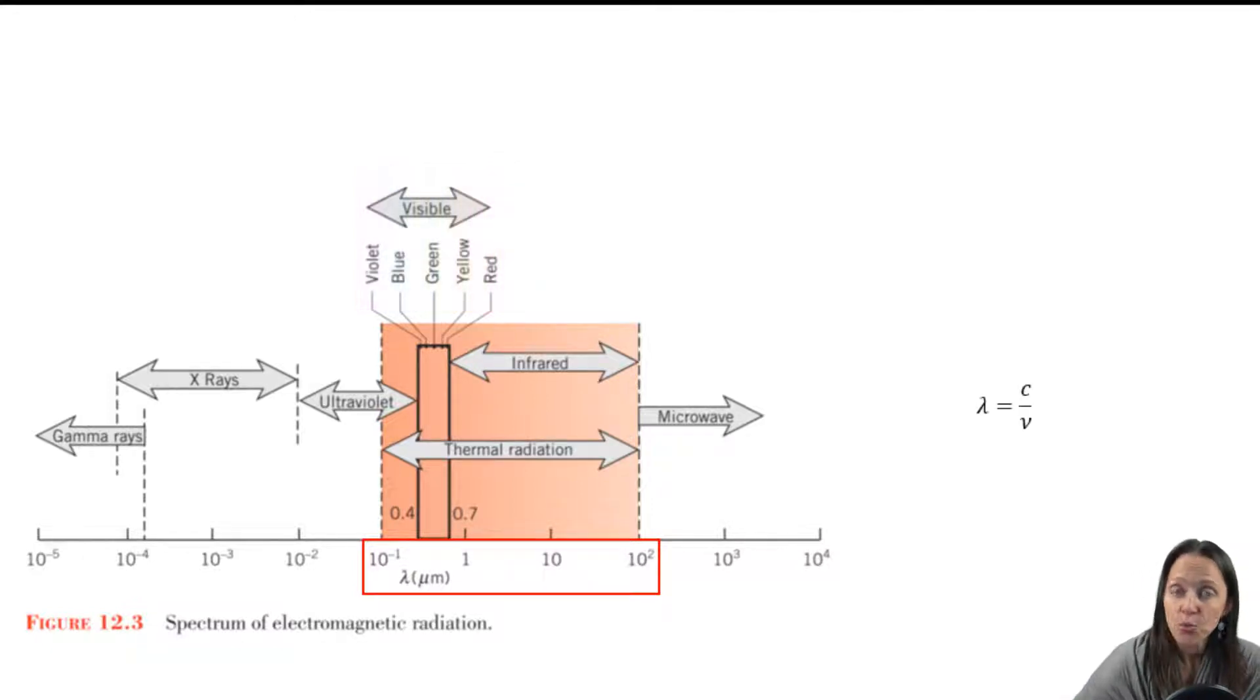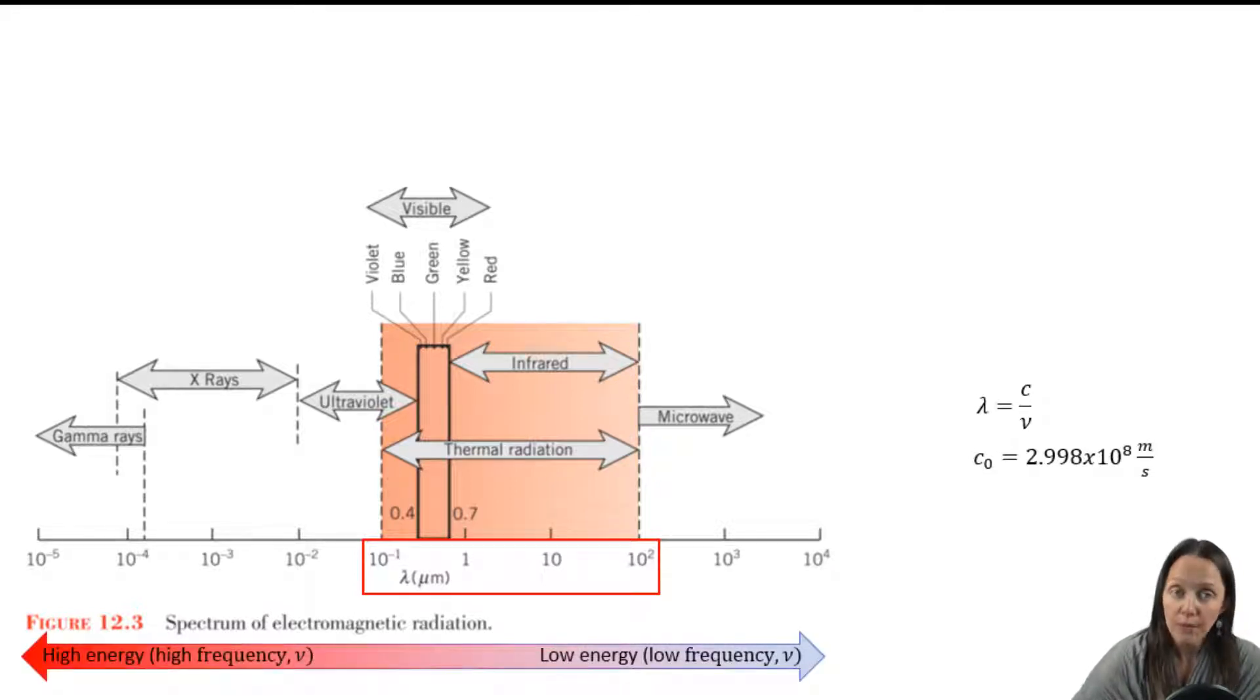That wavelength is related to the frequency by this equation. C is the speed of light in the medium. And if that medium is in a vacuum, then C is expressed as the constant C naught. And you can see by the expression that the frequency and the wavelength are inversely related to one another.